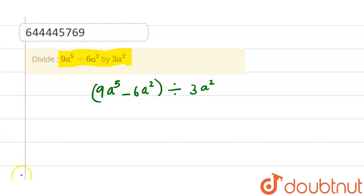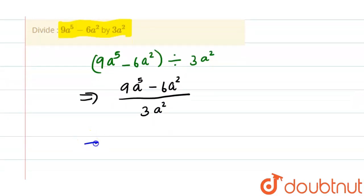Now let's write this down: 9a raise to 5 minus 6a square by 3a square. We can now split this and write 9a raise to 5 divided by 3a square minus 6a square divided by 3a square.